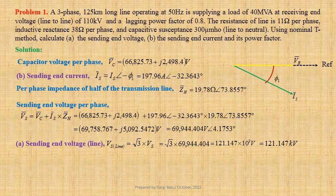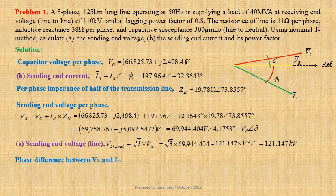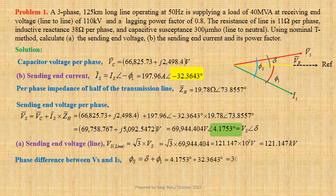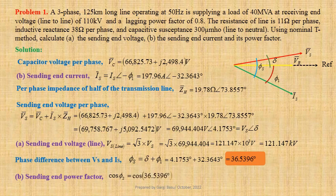VS may be expressed in polar form as VS at an angle delta. The phase difference between VS and IS is φs equals delta plus φ1. Using values, 4.1753° plus 32.3643° gives 36.5396 degrees. The sending end power factor cos φs equals cos(36.5396°), that is equal to 0.8034 lagging.